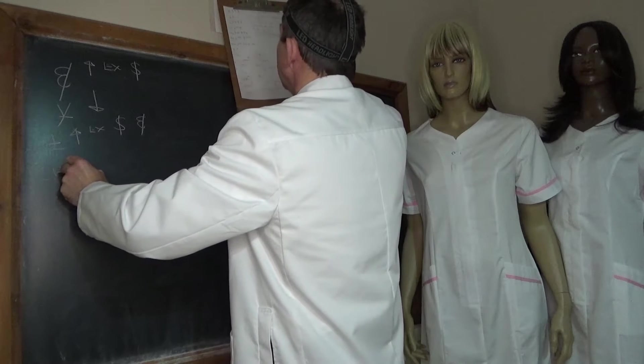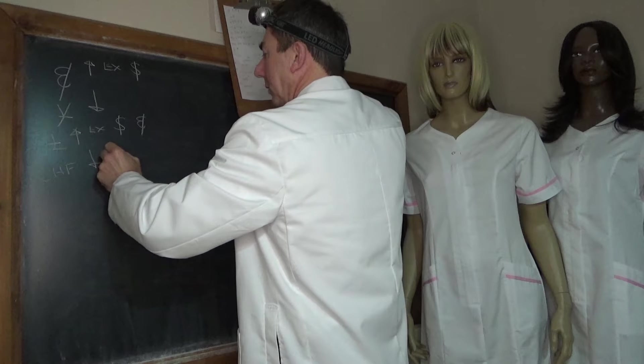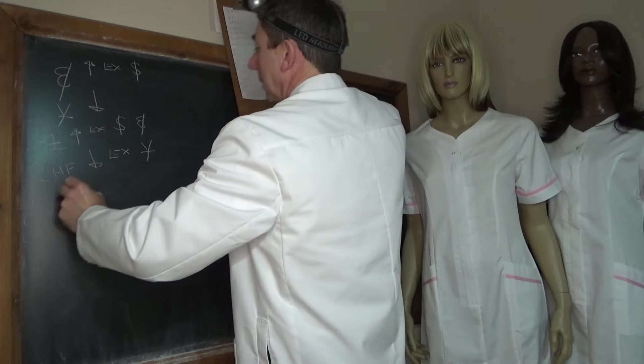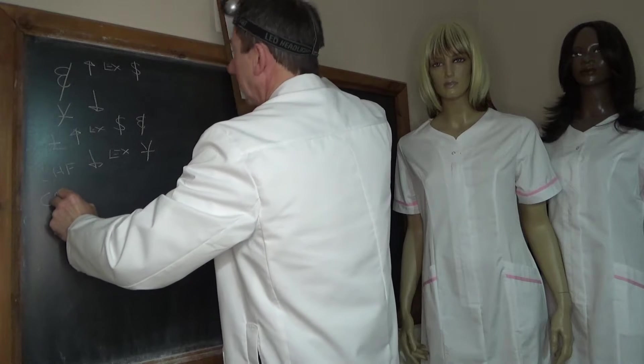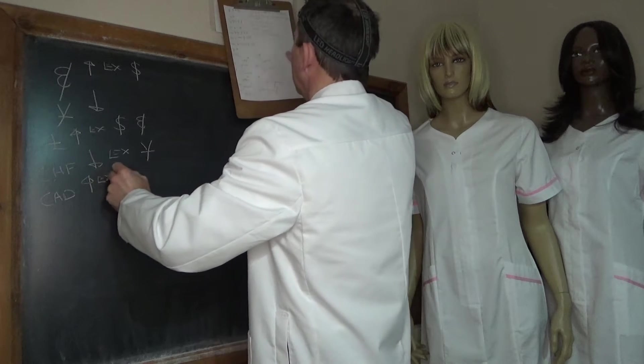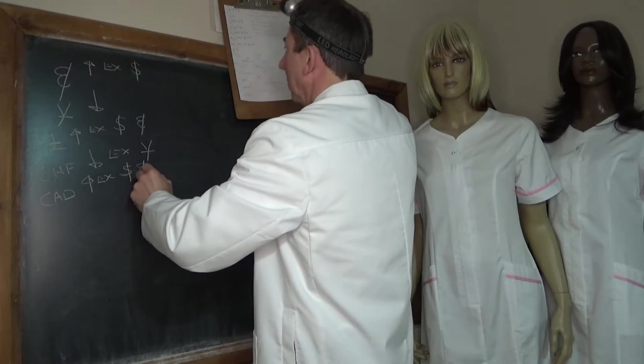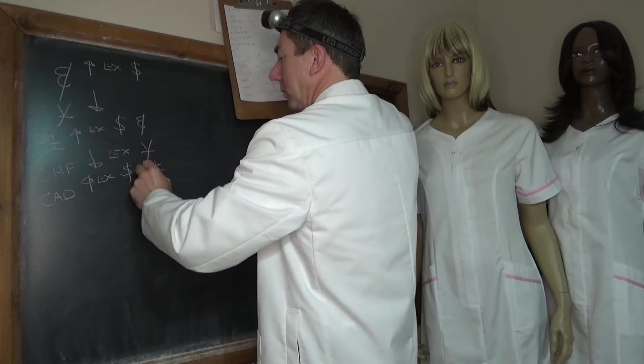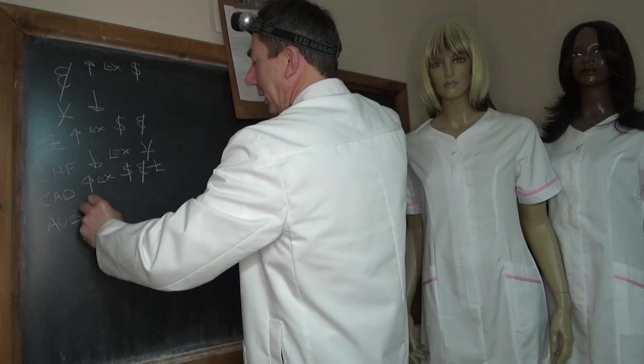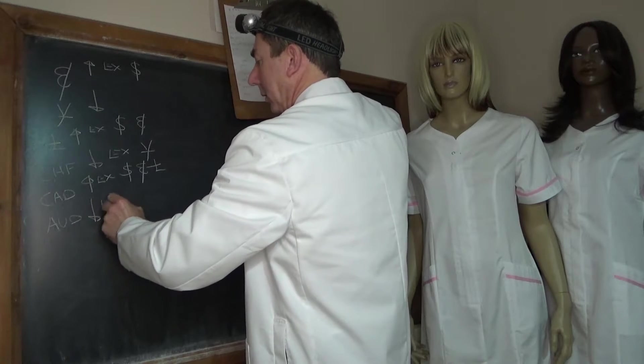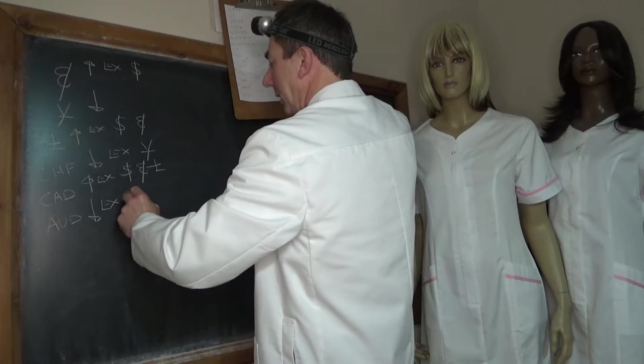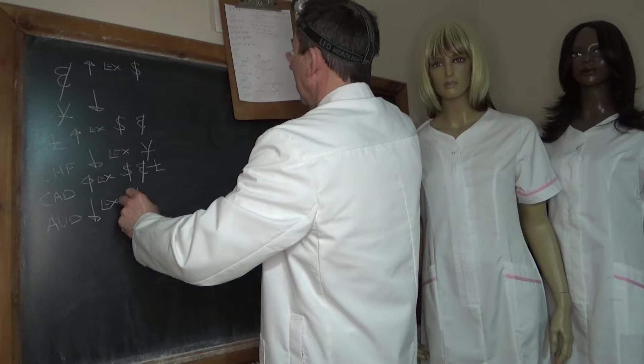The Swiss is weak except against the Yen which is weaker. The CAD is strong except against the dollar and the Euro and the Pound. The AUD is weak except against the Yen and the Swiss.